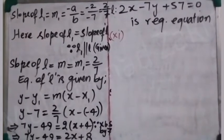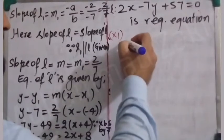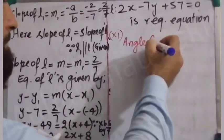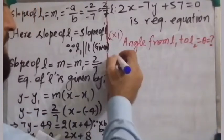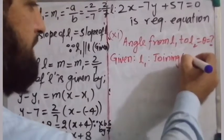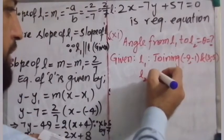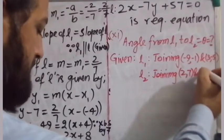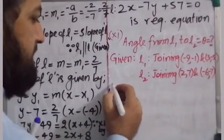Here is question number 11. We are asked to find the angle between lines L1 and L2. The angle from L1 to L2 is required — we name this theta. L1 joins the points (-9, -1) and (3, -5). L2 joins the points (2, 7) and (-6, -7). The angle is found with the help of slope, so first we find the slopes of these two lines.